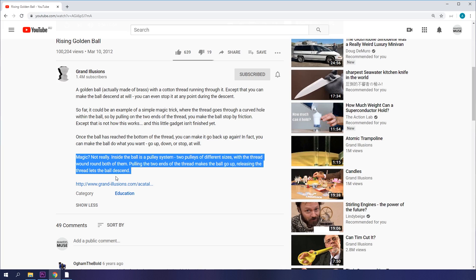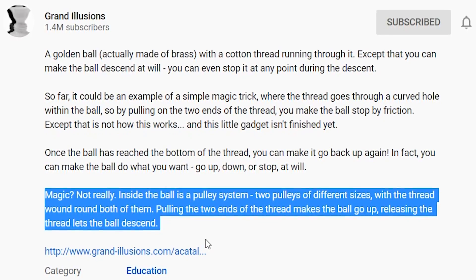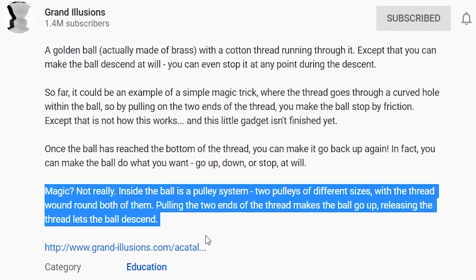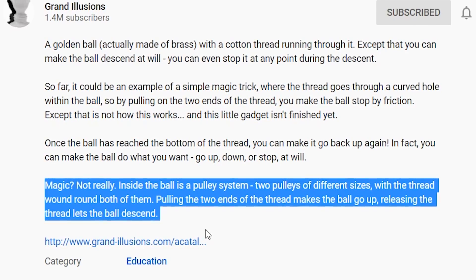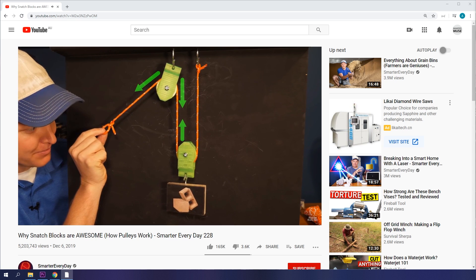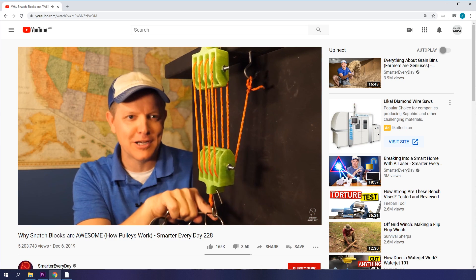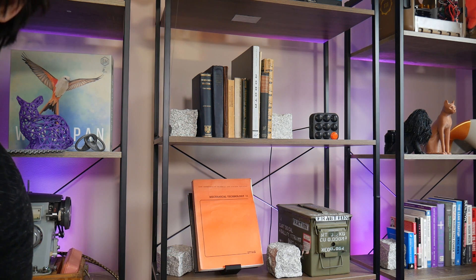Remember that short description? Given the clues are all there. Tim states that inside the ball is a pulley system, two pulleys of different sizes with the thread wound around both of them. Pulling the two ends of the thread makes the ball go up, releasing the thread lets the ball descend. Pulley systems are capable of simply incredible things such as multiplying and redirecting force. Just watch Destin's video on the humble snatch block on Smarter Every Day to see just how cool these systems are. Even 3D printed his demonstrator, which I can totally get behind. But what of the pulley system in this secretive sphere?